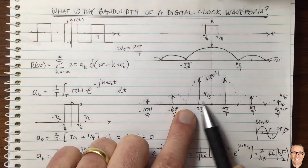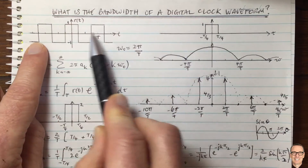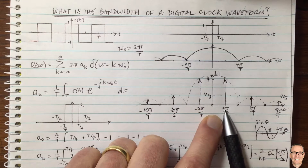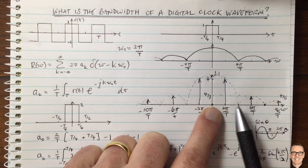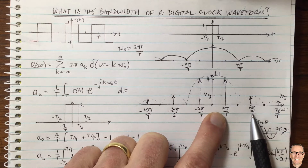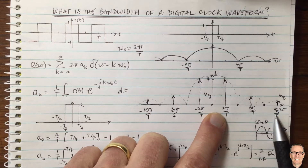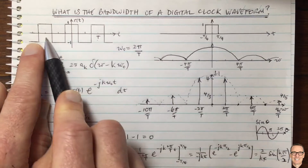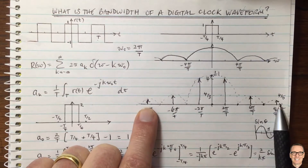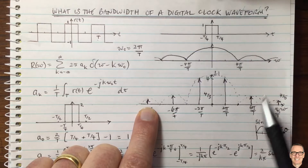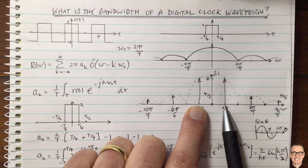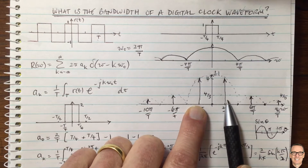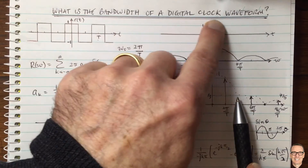We now have the Fourier transform of the digital clock waveform. Comparing it to the aperiodic case, we can see it follows a sinc function envelope. The bandwidth of this clock signal is infinite — just as for the aperiodic case — but it only exists at discrete frequency components corresponding to the odd harmonics.